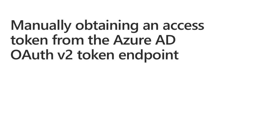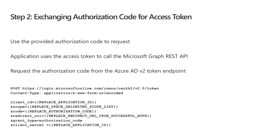To obtain an access token, issue an HTTP POST to the Azure AD OAuth2 v2 token endpoint, with the following values in the form-encoded body: client_id (the Azure AD application ID), client_secret (the application's password), scope (space-delimited list of permissions), code (the authorization code from the authentication process), grant_type set to 'authorization_code' (or 'refresh_token' if passing a refresh token to get a new access token), and the redirect_uri — the same URI used when requesting the authorization code.